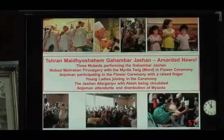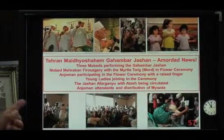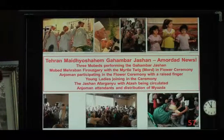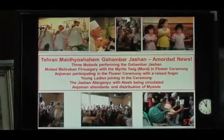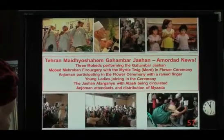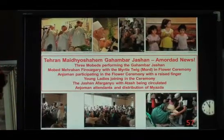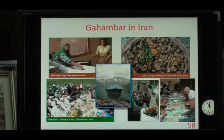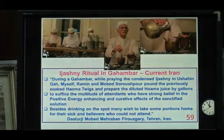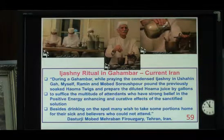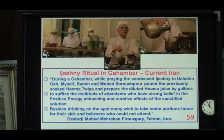Similarly, the myrtle twig, the index finger, even the young people join in, and then they take the Afrganyu to everybody so everybody can have the smoke. The lower right-hand corner shows how the Meers is distributed. Here is the same thing in the Gambara in Iran, and then an interesting thing: Dastuji Merban Firozgari sent it to me when I asked what they do currently for Gambara in Iran. These are his own words.